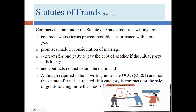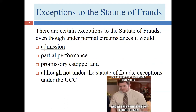In our second lecture, we talked about the exceptions to the statute of frauds. We talked about when the defendant admits the terms of the contract — even though the contract should have been in writing, if the defendant admits the oral terms, then he can't assert the statute of frauds. We also talked about when the plaintiff has partially performed under the contract, then the defendant is not going to be able to assert the statute of frauds. We talked about promissory estoppel: when the defendant made a promise and the plaintiff reasonably and detrimentally relied upon that promise, then that is going to trump the lack of writing in many cases.